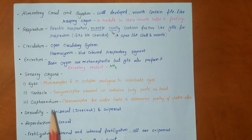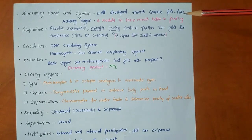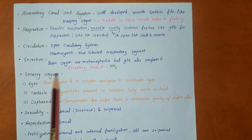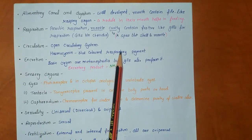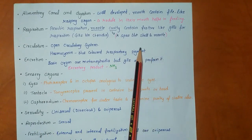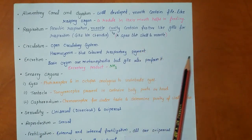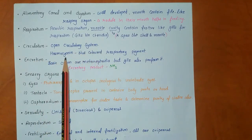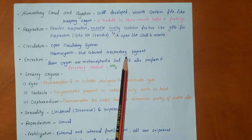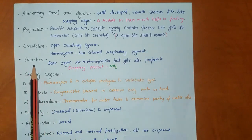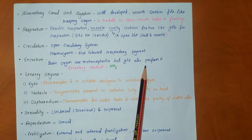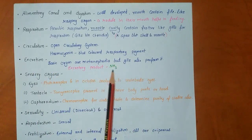The alimentary canal and digestion are well developed. The mouth contains a file-like rasping organ called the radula, which helps in feeding. Respiration is aerobic. The mantle cavity — the space between the shell and mantle — contains feather-like gills for respiration. Circulation: open circulatory system. Haemocyanin is the blue-colored respiratory pigment. Excretion: the basic organs are metanephridia, but gills also assist. The excretory product is ammonia.